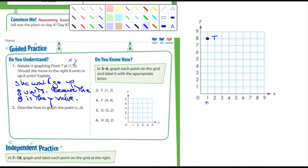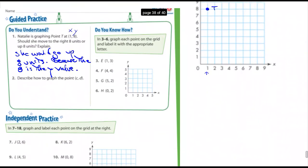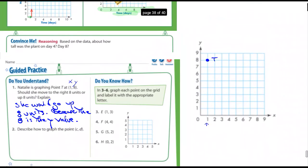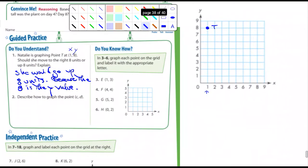Number two says, describe how to graph the point CD. What are they talking about? What am I missing here? Point CD? Describe how to graph the point CD. What am I missing here? I'm going to cancel that because I'm confused about something that's probably pretty obvious. But that's okay. That happens sometimes.